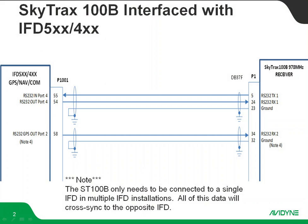You'll notice that in this drawing we're using RS-232. The Skytrax 100B absolutely has the capability to do 429 for traffic, and the IFD has the capability to take in the 429 traffic from the Skytrax 100B, but it's not the recommended format. The reason is that ARINC 429 traffic data is going to simulate TAS targets — that's what your targets are going to look like. If you do this via RS-232, which is our recommended format, what you're going to get is full ADS-B symbology on the IFD side.